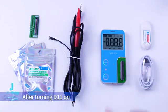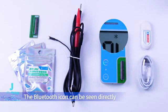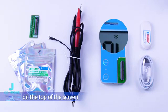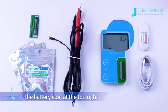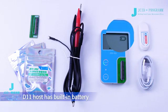After turning D11 on, the Bluetooth icon can be seen directly on the top of the screen. Used with Bluetooth adapter, data can be transmitted wirelessly. The battery icon at the top right of the screen is the power display.